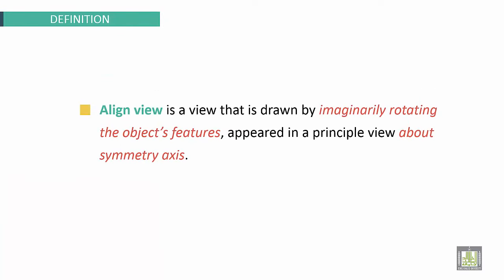Aligned View is a view that is drawn by imaginatively rotating the object's features appeared in a principal view about a symmetry axis.